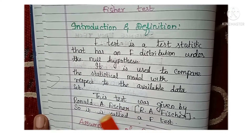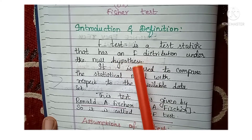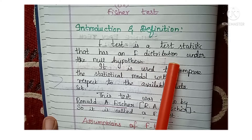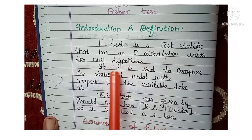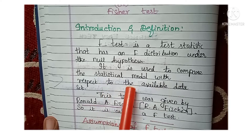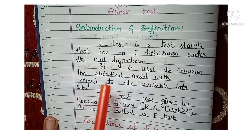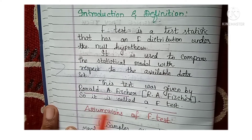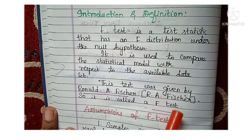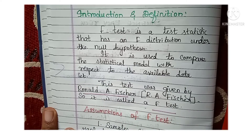F-Test is a test statistic that has an F-Distribution under the null hypothesis. It is used to compare the statistical model with respect to the available data set. This test was given by Ronald A. Fischer (F-I-S-C-H-E-R). That's why it is called as F-Test — as an honorary to Ronald A. Fischer, we have given the name F-Test or F-Distribution Test.